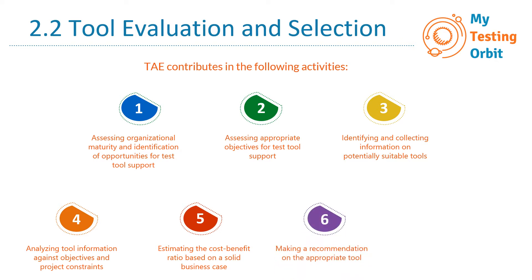Number six is making a recommendation on the appropriate tool. Once you have analyzed, evaluated, and most probably selected a tool, you are in a better position to recommend it. The test automation engineer can recommend one or maybe a couple of tools to the test automation manager. Number seven is identifying compatibility of the tool with system under test components — if the tool is not compatible with your system, it is a waste of time and money.